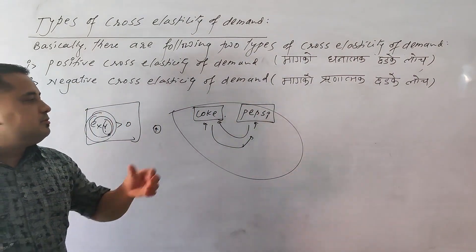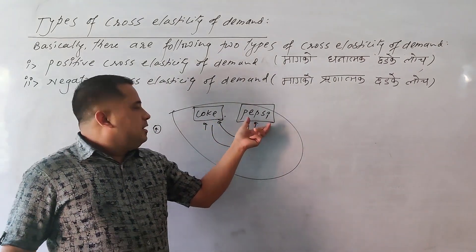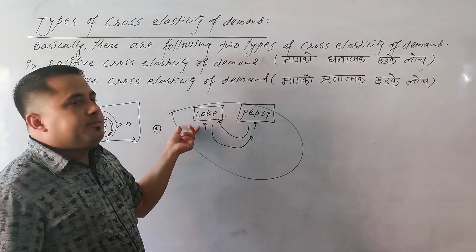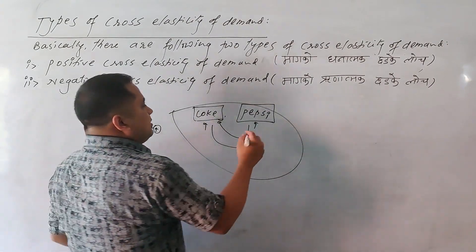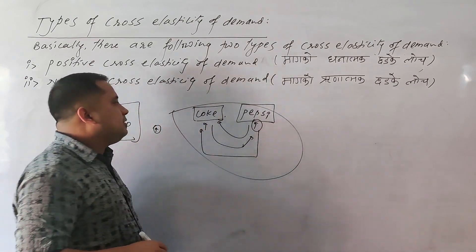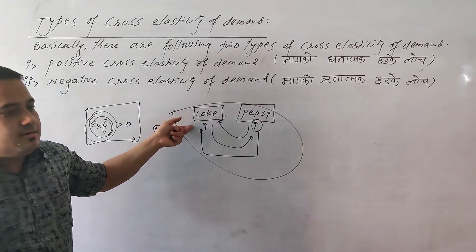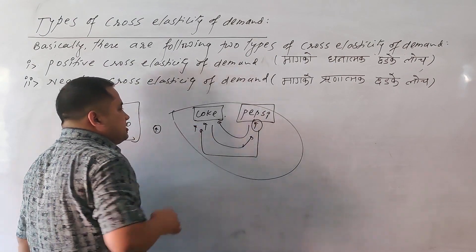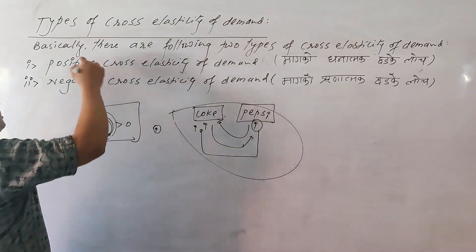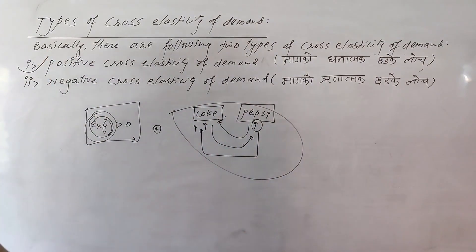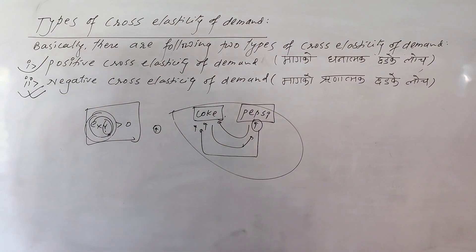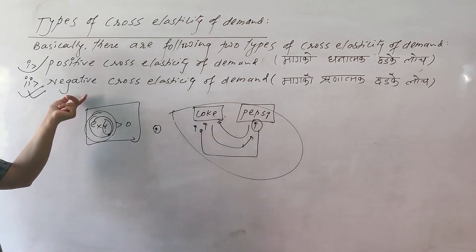For example, consider Pepsi. If the price of Pepsi increases, demand for a substitute like Coca-Cola rises. This represents negative cross elasticity of demand.